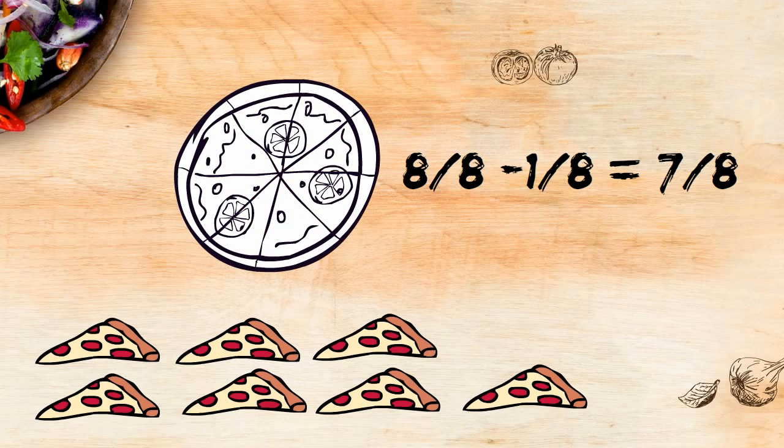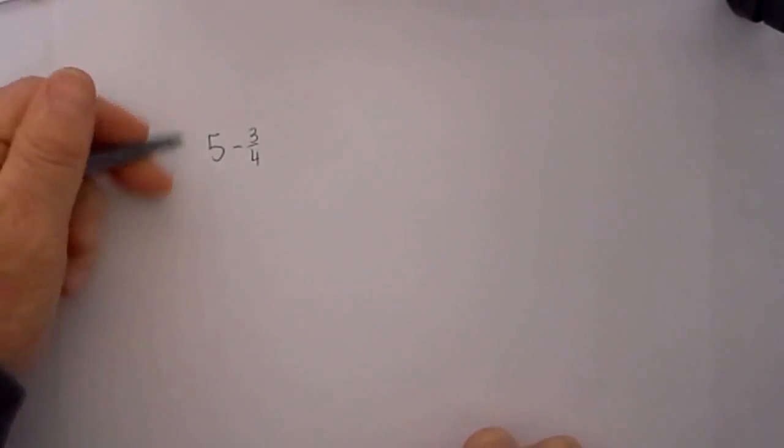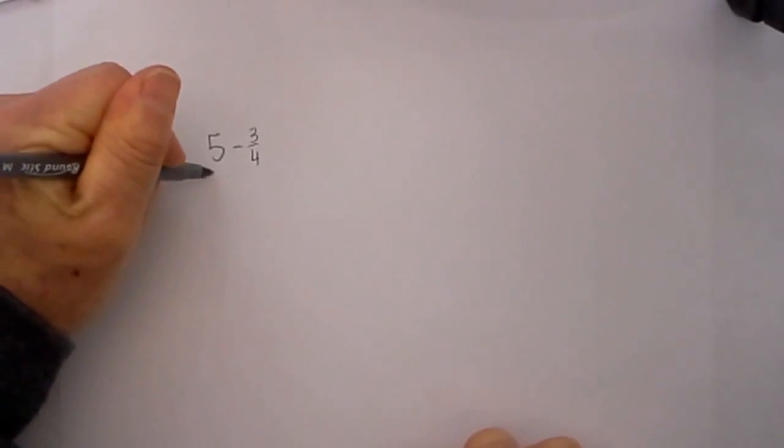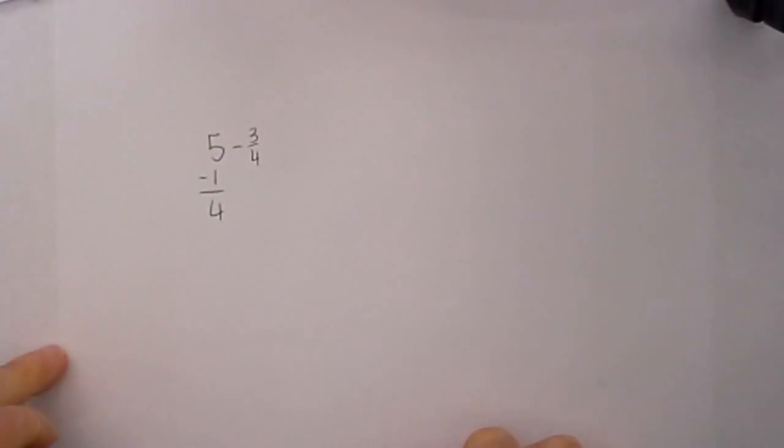Let's now apply this concept to subtracting fractions from whole numbers. Let's say we have 5 minus 3/4. So here is the shortcut. We will first subtract 1 from the whole number, and that gives us 4.